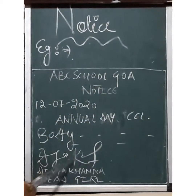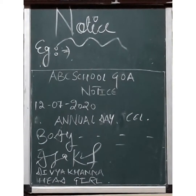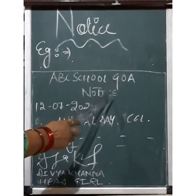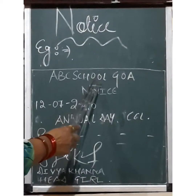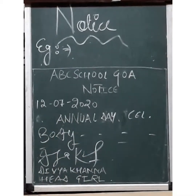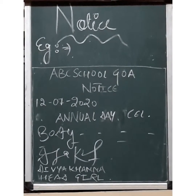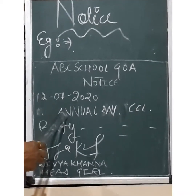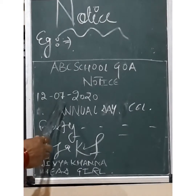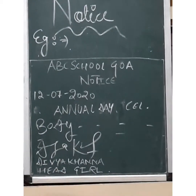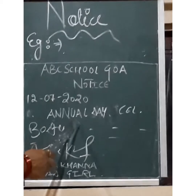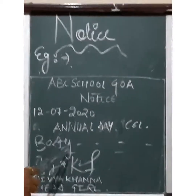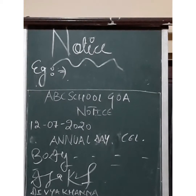A rectangular box is to be drawn in which we will be writing our notice content. The name of the organization comes first — let's say ABC School, Goa. Please remember that whenever you are writing the name of the organization and the word NOTICE, it always has to be in capital letters. Then we write the word NOTICE just below the school name. Then we write the date on which the notice is being issued — let's say 12th July 2020. Then we write the title of the notice, that is, Annual Day Celebration.